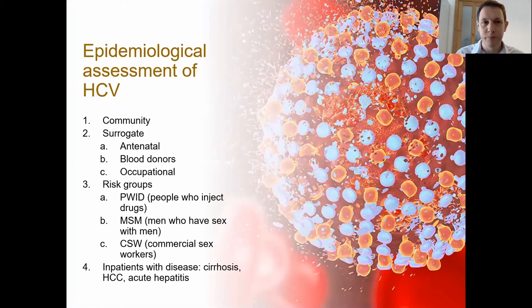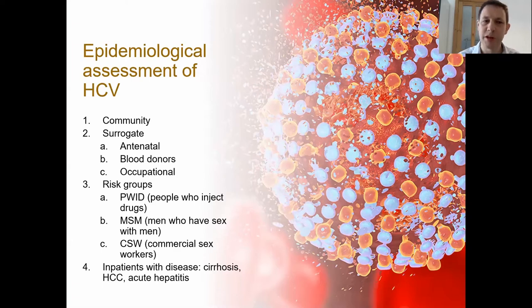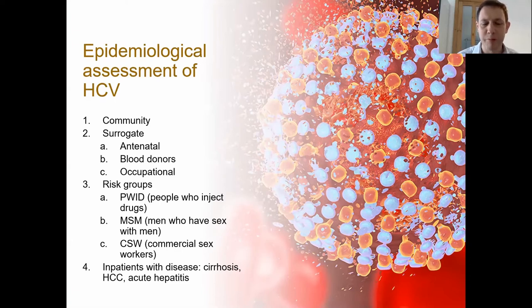Concernant l'évaluation épidémiologique de la prévalence du VHC, c'est une approche différente pour estimer la prévalence au sein de la communauté. Nous nous sommes intéressés aux groupes à risque tels que les personnes qui s'injectent des drogues, les hommes qui ont des relations sexuelles avec les hommes, et les travailleurs du sexe. Les femmes enceintes, les groupes de consultation prénatale, les donneurs de sang et les groupes professionnels sont souvent utilisés comme groupes de substitution pour la prévalence communautaire. Dans cette étude, nous avons cherché à évaluer la prévalence communautaire au sein de la population générale.